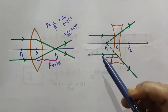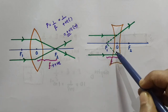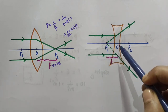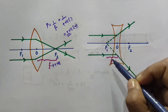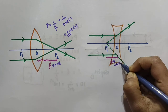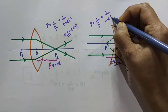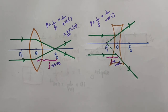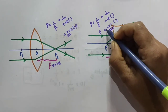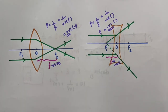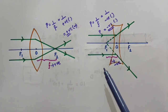So power is positive for a convex lens or converging lens, and power is negative for a concave lens or diverging lens.